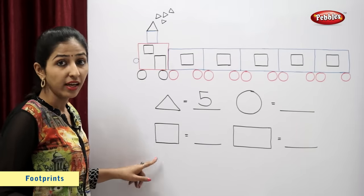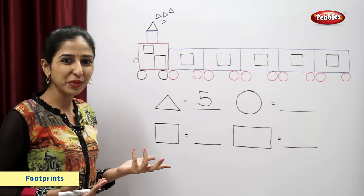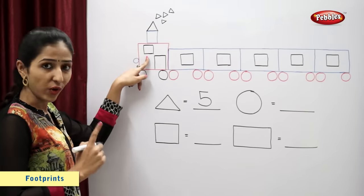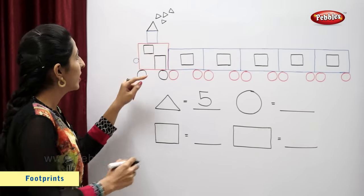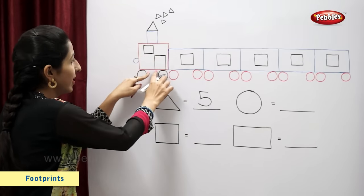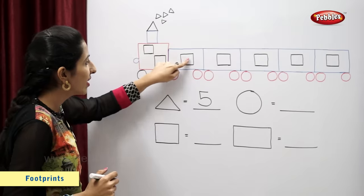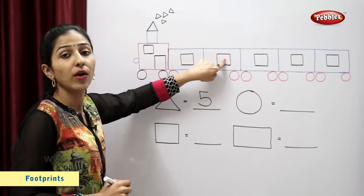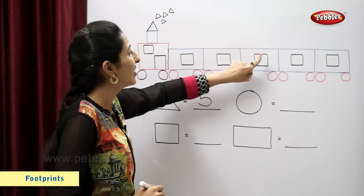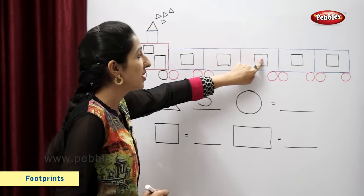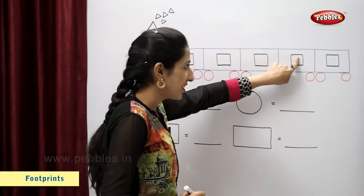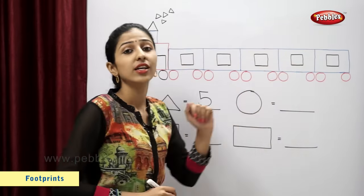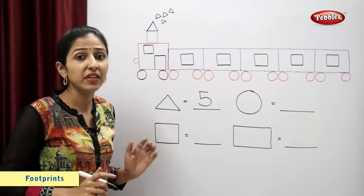Square. Now let's count the number of squares: one, two, three, four, five, six, and seven. So there are seven squares.